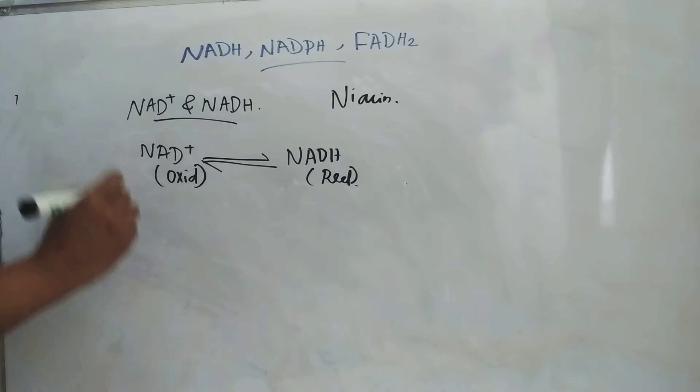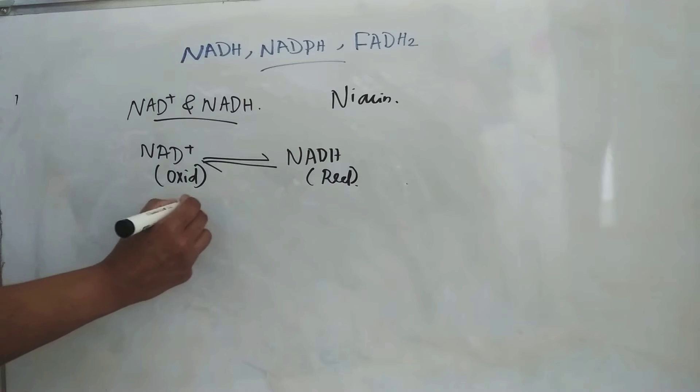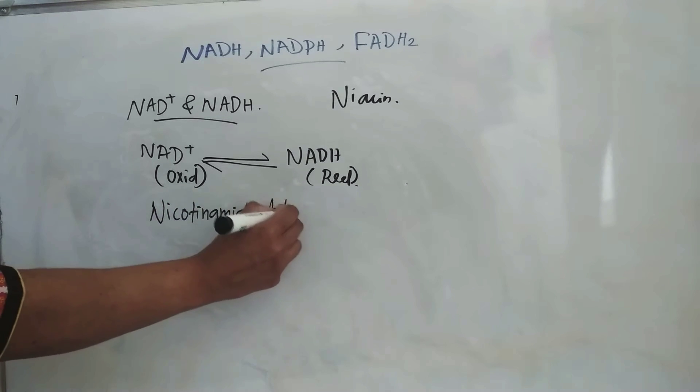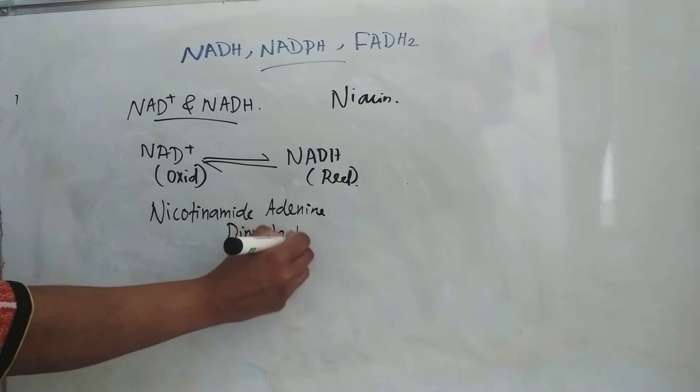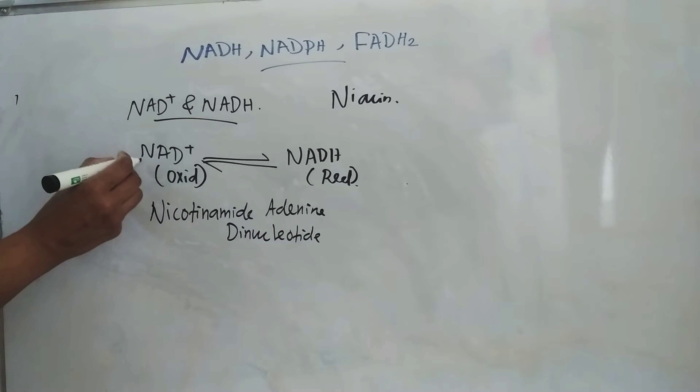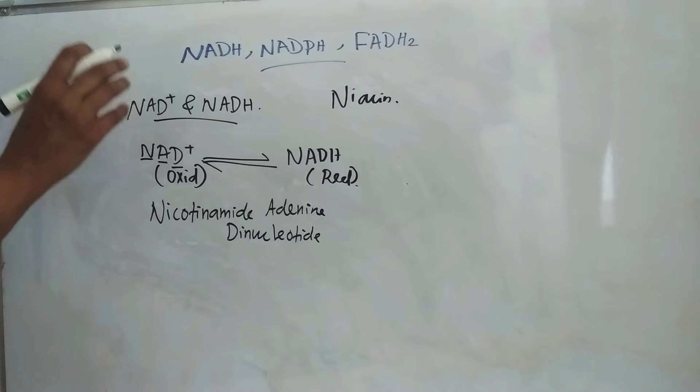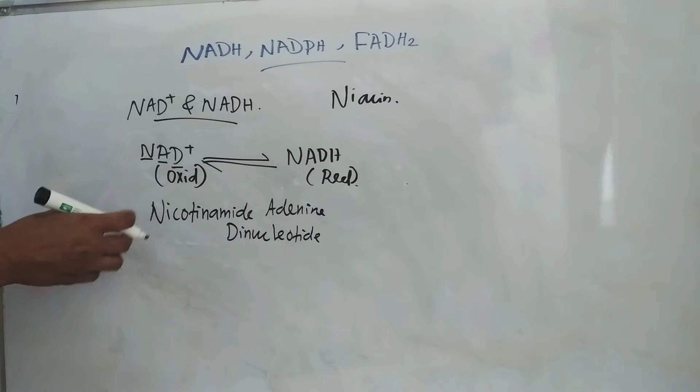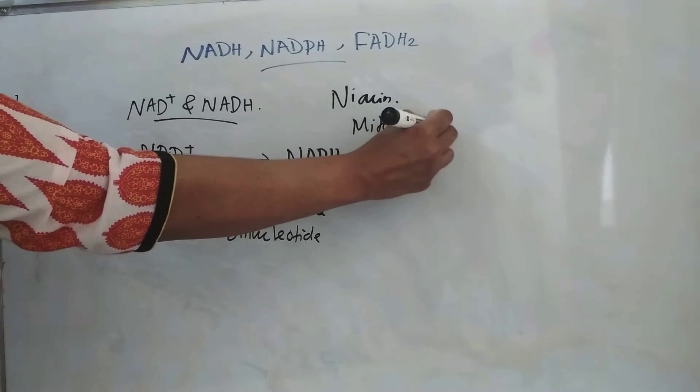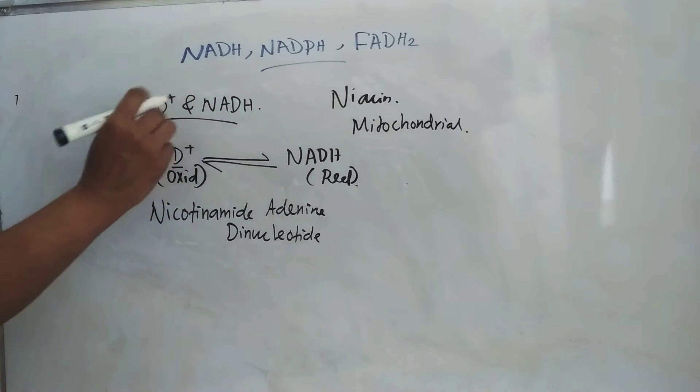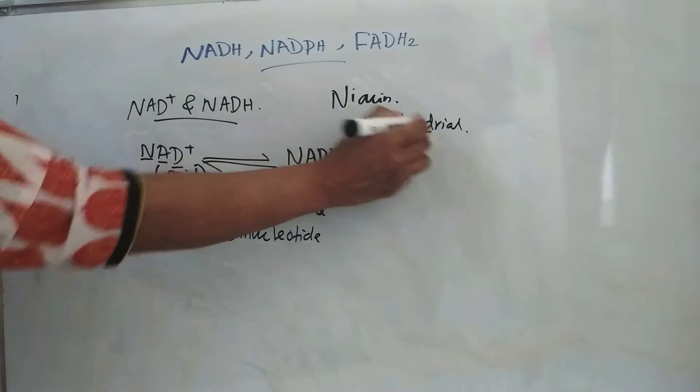So NAD plus is known as nicotinamide adenine dinucleotide and it is a coenzyme which is used in different reactions. Normally, these are found in mitochondrial system. This NADH, NAD plus and NADH, these are found in mitochondrial system.